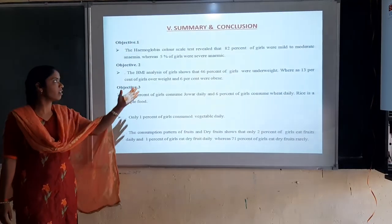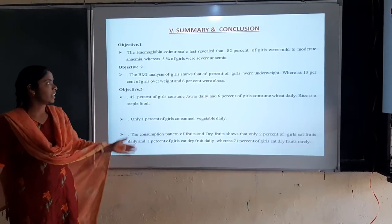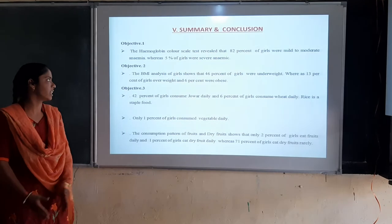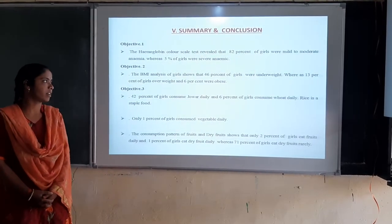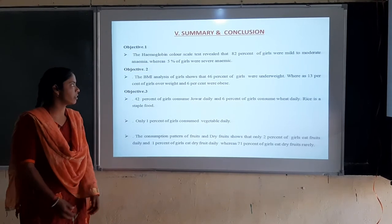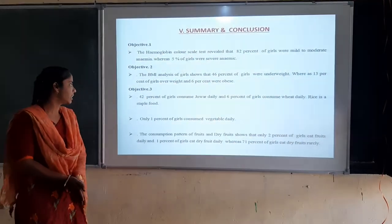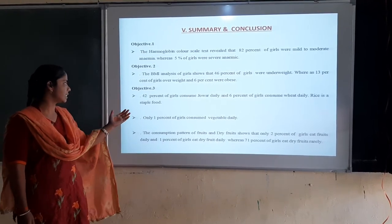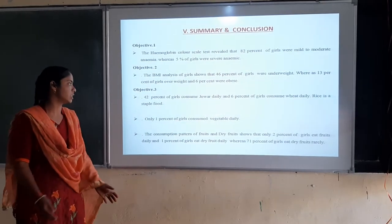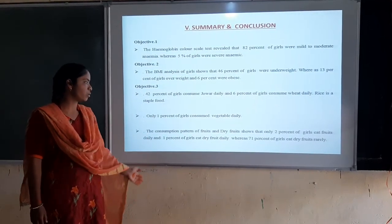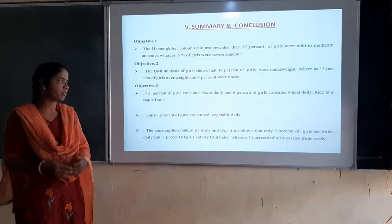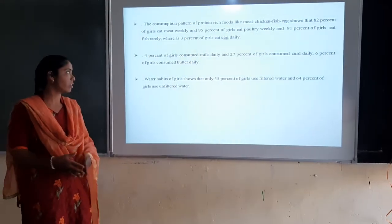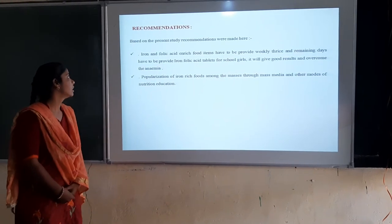Now presenting the summary and conclusion. 82% of girls had mild to moderate anemia, while 5% had severe anemia. 46% of girls were underweight, 13% were overweight, and 6% were obese. 42% of girls consumed jowar daily and 6% consumed wheat daily; rice is a staple food. Only 1% of girls consumed vegetables daily. Only 2% of girls eat fruits daily and 1% eat dry fruits daily, whereas 71% of girls eat dry fruits rarely.